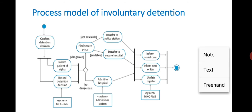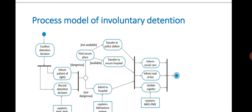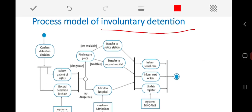Context models simply show the other systems in the environment but do not show how the system being developed will be used or how the process will be done — they never show the dynamic nature of activities. That is only possible with activity diagrams. As an example, we have taken a simple process model — an activity diagram — titled 'Involuntary Detention', which relates to the MHC PMS mental health clinic software.